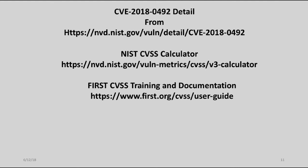I will be using a vulnerability from the NVD, or the National Vulnerability Database — CVE-2018-0492 — located at the first link shown. The NIST CVSS calculator is available at the second link; you might want to load the calculator for our walkthrough. The third link provides detailed documentation and interactive training for how to use the CVSS calculator and its results.